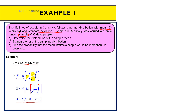Next question: find the standard error. The standard error, σ_x̄, uses the formula for known variance. Substitute σ = 5 and n = 30. Therefore, the standard error of the sampling distribution equals 0.9129.